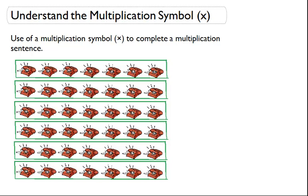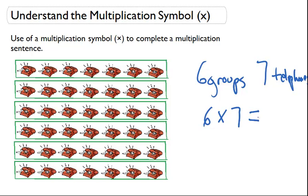So a sentence we could make is that there are 6 groups of 7 telephones. I'm going to write that here: 6 groups, 7 telephones. So here we could write this sentence like this: 6 times 7, so we could find out the total number of telephones.